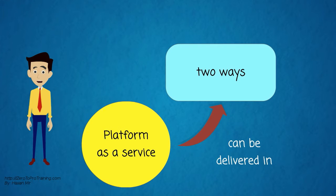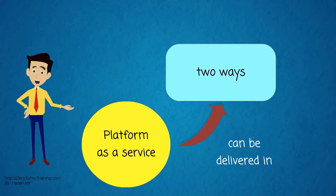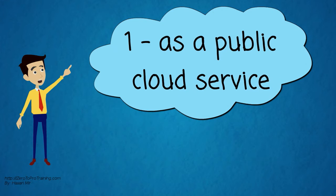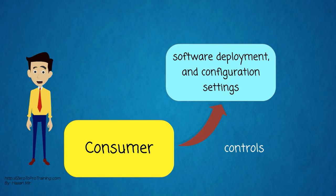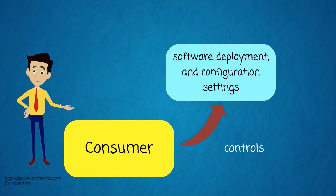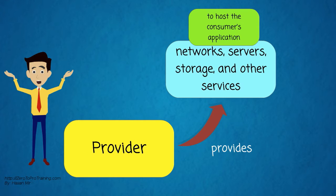Platform as a Service can be delivered in two ways. As a public cloud service from a provider, where the consumer controls software deployment and configuration settings, and the provider provides the networks, servers, storage, and other services to host the consumer's application.